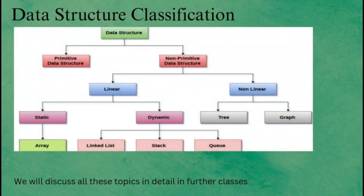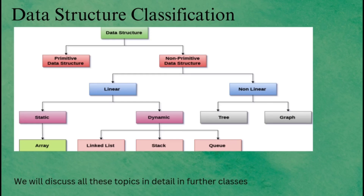Coming to the next slide, we are going to break down the data structure classification chart. It's a simple way to understand the different types of data structures used in programming. At the top level, data structures are divided into primitive and non-primitive data structures. Primitive data structures are the basic building blocks like integers, characters, and pointers — these are built into the programming language. Non-primitive data structures are more complex; they are created using primitive data types to solve real-world problems more efficiently.